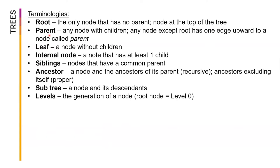We also have the parent node, which is any node with children. Any node except the root has one edge upward to a node called the parent. If an arbitrary node V has an edge upward, that connecting node is its parent. We also have the leaf, which are nodes without children, and an internal node, which is a node that has at least one child.